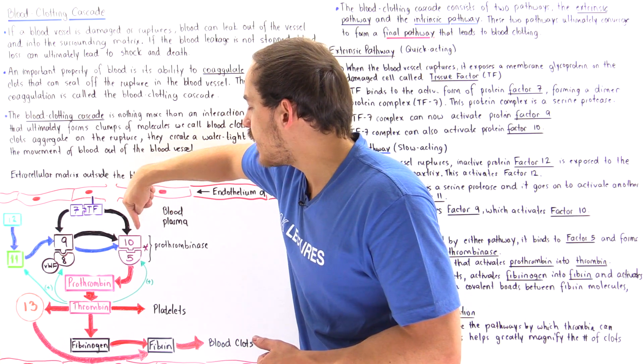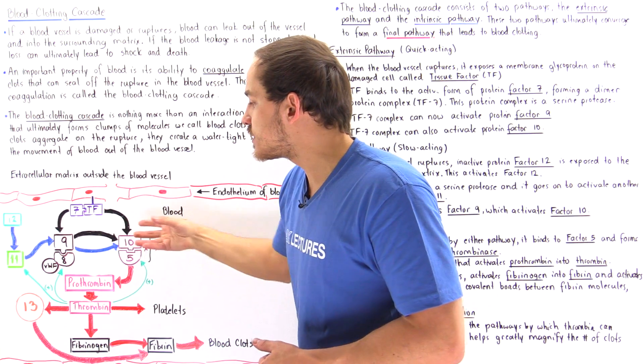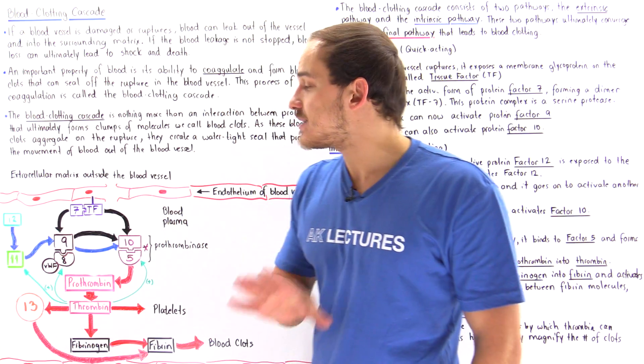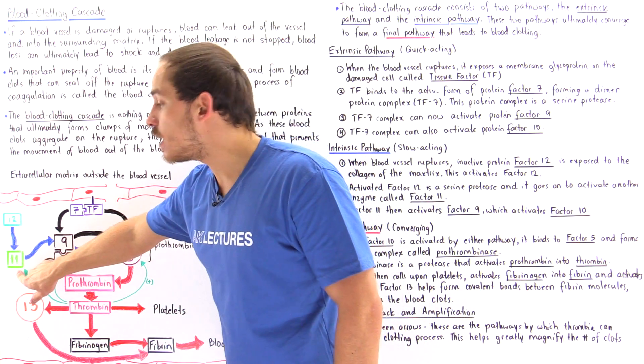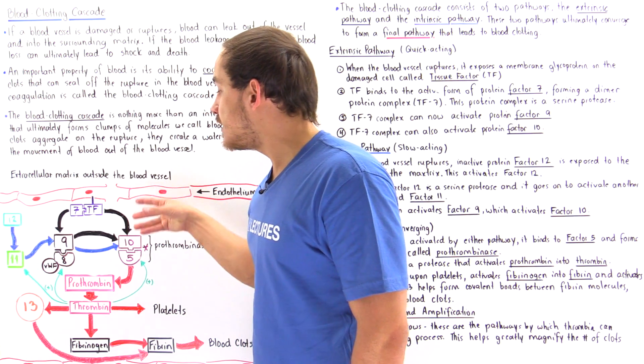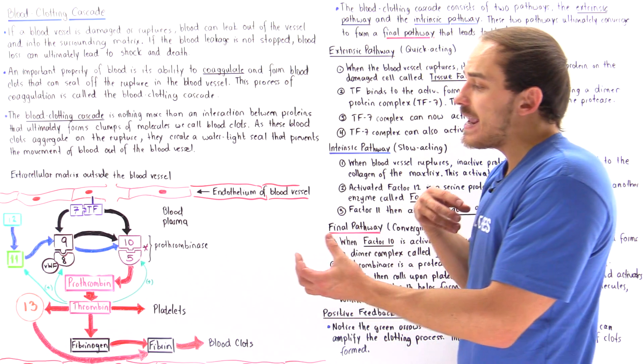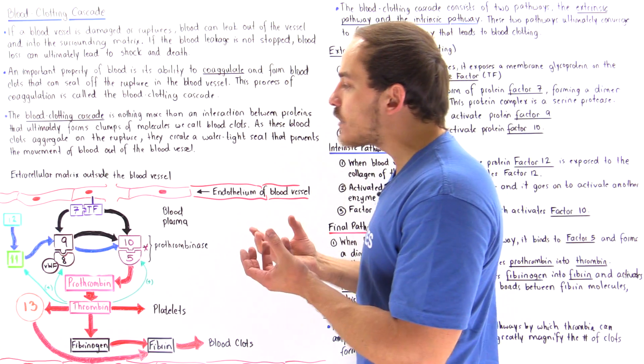goes on to activate more factor 10 to form this complex. Thrombin also activates, via positive feedback mechanism, more factor 11, and factor 11 is needed to activate factor 9. So we see that we have a really extensive network of